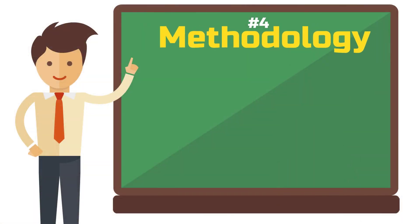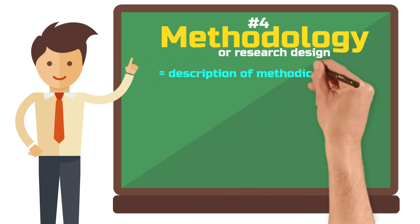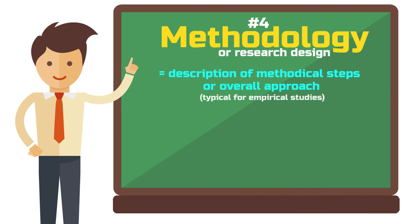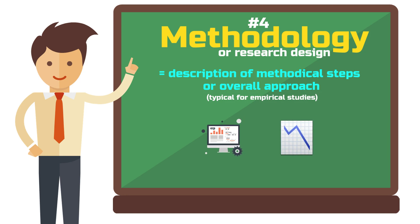Step 4: Methodology. Once you have developed your theory and reviewed the current literature, you move on to the next section. This methodology or research design section involves the description of methodical steps or your research design in general. However, this section is typical for empirical studies in which you need to describe your data collection and analysis techniques. If you have a systematic approach to analyzing literature, you can explain how you did this here as well. If there is no systematic approach, you can skip this.